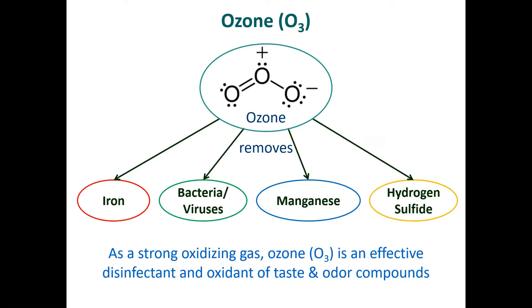Let's talk a little bit about ozone. It's kind of an interesting chemical — you may remember from Chem 101 talking about resonance. It's three oxygens and it's really quite a reactive compound. It has a very strong oxidizing power, which means it'll destroy a lot of things, mostly organic chemicals. Ozone is very good at disinfecting water, and it can remove things like iron, manganese, and hydrogen sulfide.